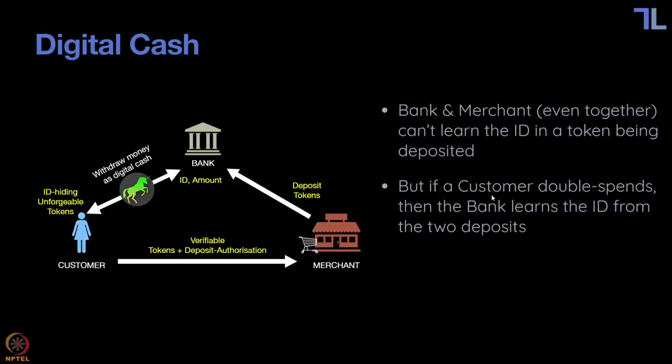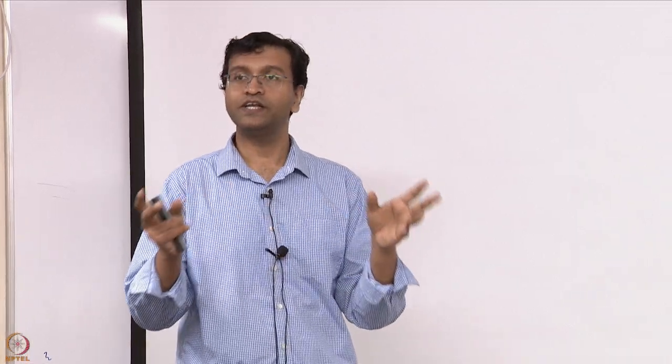We don't actually prevent it in the Chaum scheme — what we do is detect it. When you detect it, you'll actually find out who the customer is. It's kind of magic: if you spend it once, it keeps your ID hidden. If you spend it twice, it reveals your ID. A lot like what we saw in proof systems — you answer one challenge, it keeps information hidden; you answer two challenges, it reveals something.